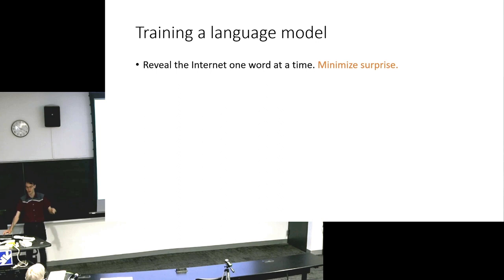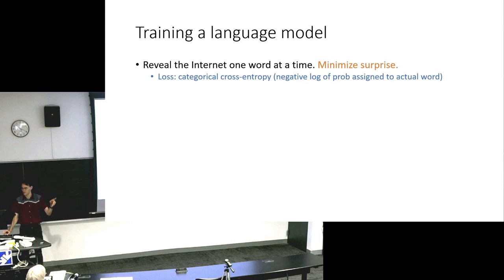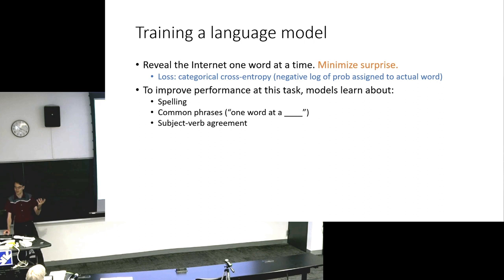So training a language model, you just reveal the internet one word at a time and minimize surprise. A whole lot of technical details went into that statement. But we've trained a categorical cross-entropy loss. I can come back and give you any more technical details of this later. But basically, this is a genius idea. In order to improve performance at this task, models end up learning about spelling, common phrases, subject and verb agreement, rhyming, summarizing, standard structures like the five-paragraph essay.